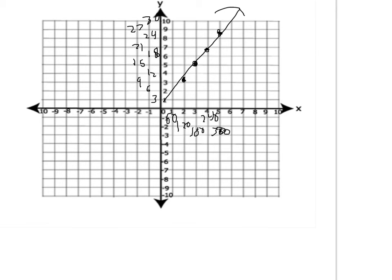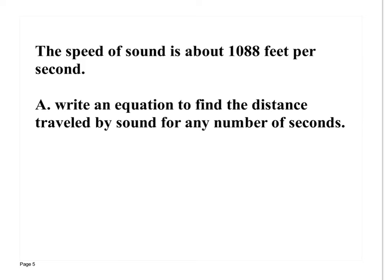Easy enough. Alright, so write this down. The speed of sound is about 1088 feet per second. Write an equation to find the distance traveled by sound for any number of seconds. So how many feet would sound travel after one second? 1088. How far would it travel after two seconds? It would double that, right? Okay, so first thing we're going to do is we're going to write an equation to find the distance traveled by sound. This is what you need to write. 1088 times X. So this equals Y. Our number of seconds is X. Our distance traveled is Y.